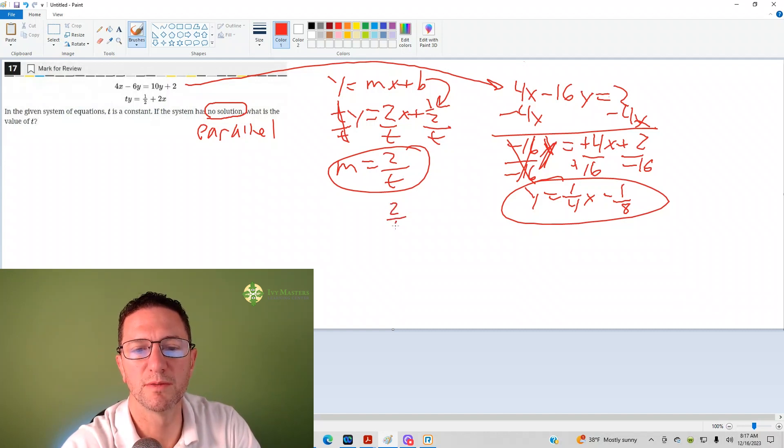So again, setting those slopes equal, 2 over t equals 1 over 4. Then I cross multiply and get the same answer, t equals 8.